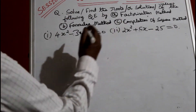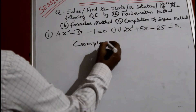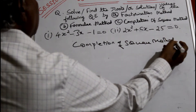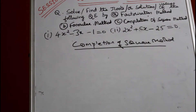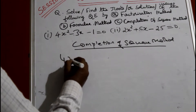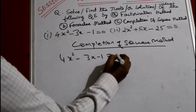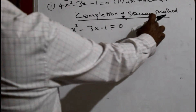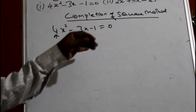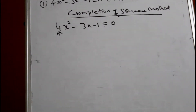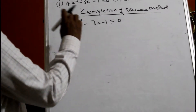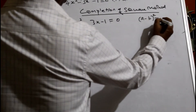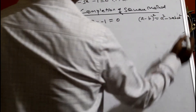Now we will do the third method called completion of square method. This method is slightly harder, especially when a number comes in front. The completion of square method is done only when they specifically ask: solve or find the roots using completion of square method. When a number is in front it is still harder. You write the formula: A minus B whole square equals A² minus 2AB plus B². A² and B² are plus, and 2AB is minus.